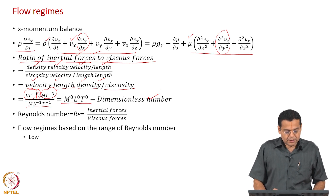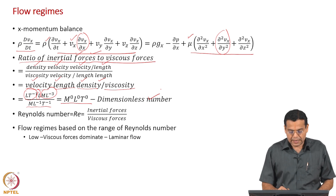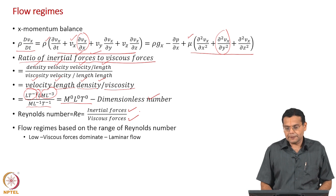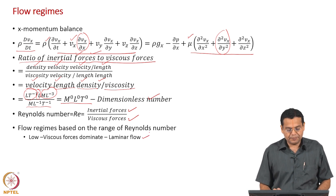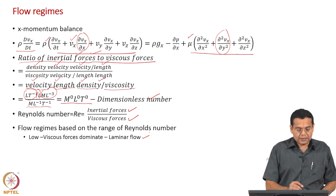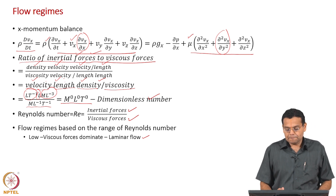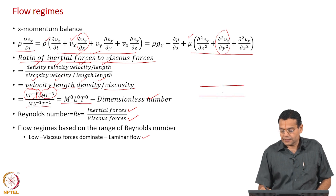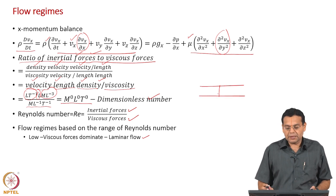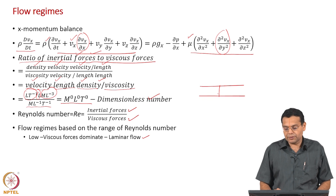When the Reynolds number is low, the inertial forces are small and viscous forces dominate — we call such a flow laminar flow. When can it happen? The velocity is low, the length scale is small (for example, the diameter of a pipe), the density is low, and viscosity is high — for instance, a very viscous oil flowing at low velocity through a small channel.